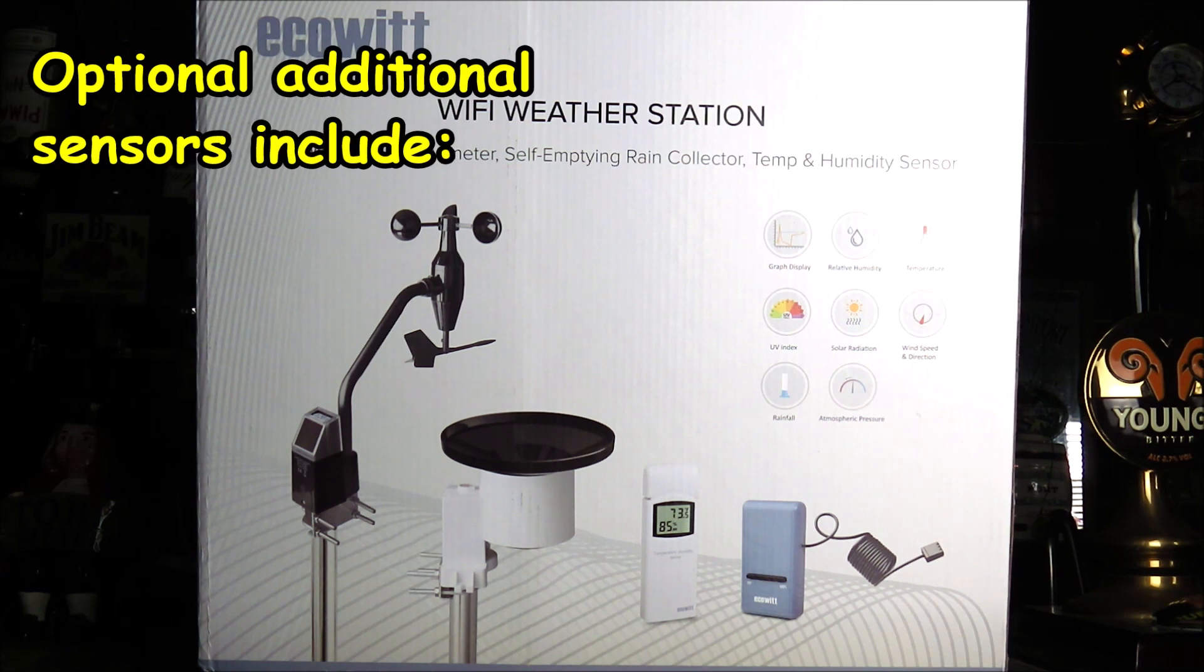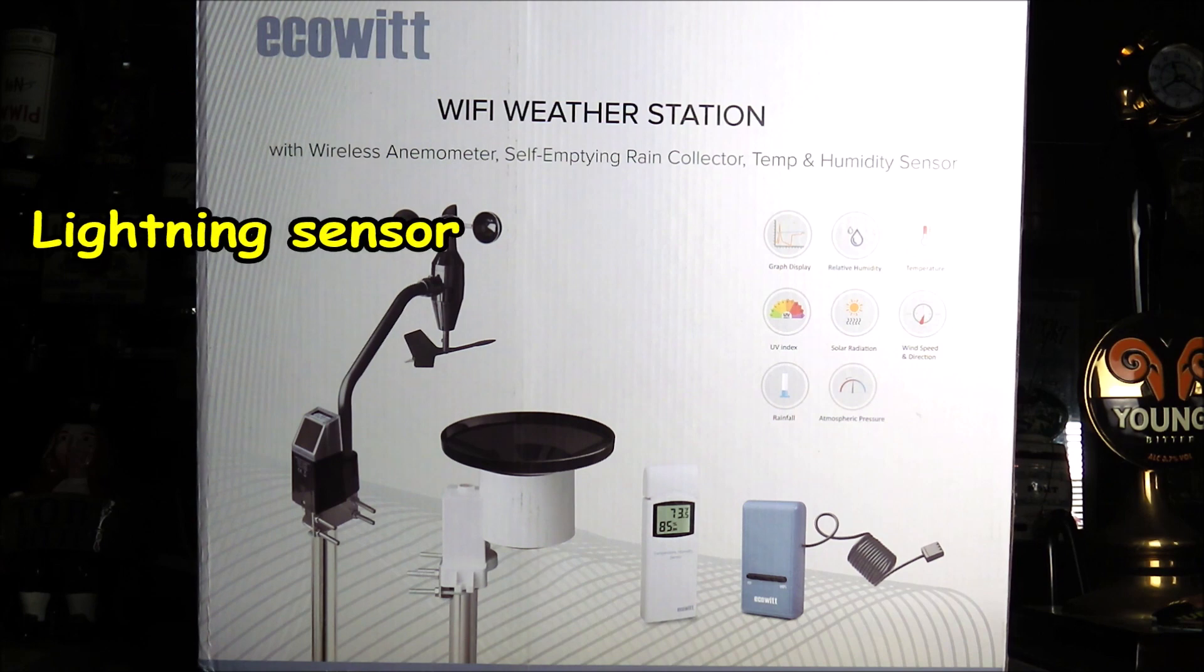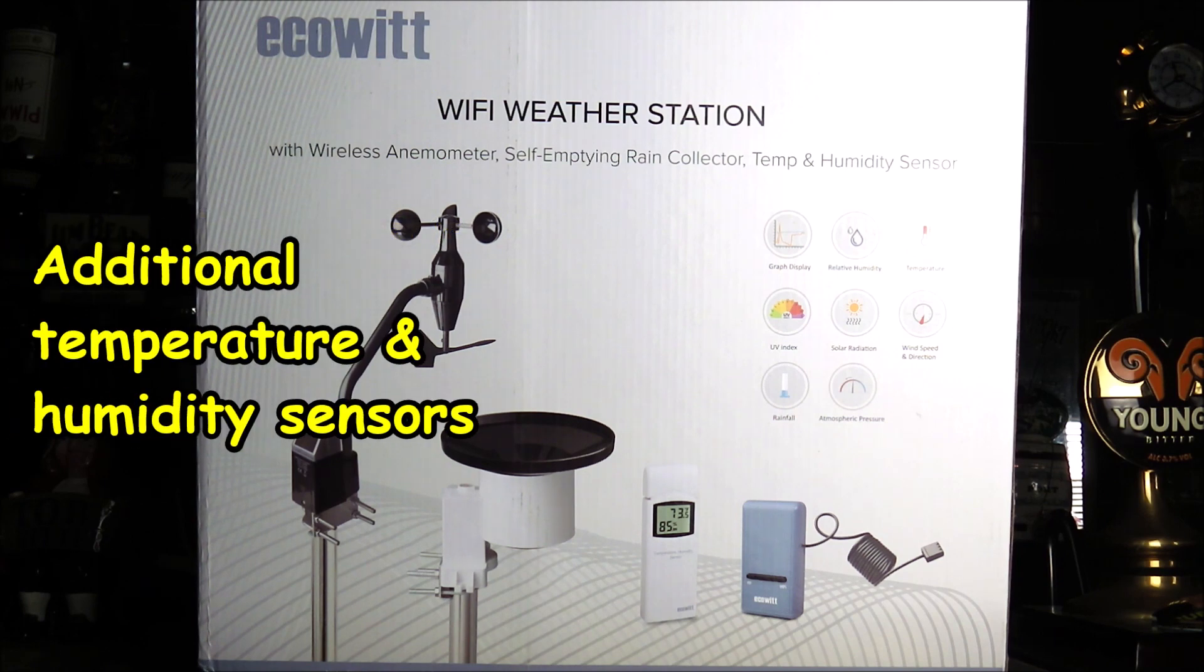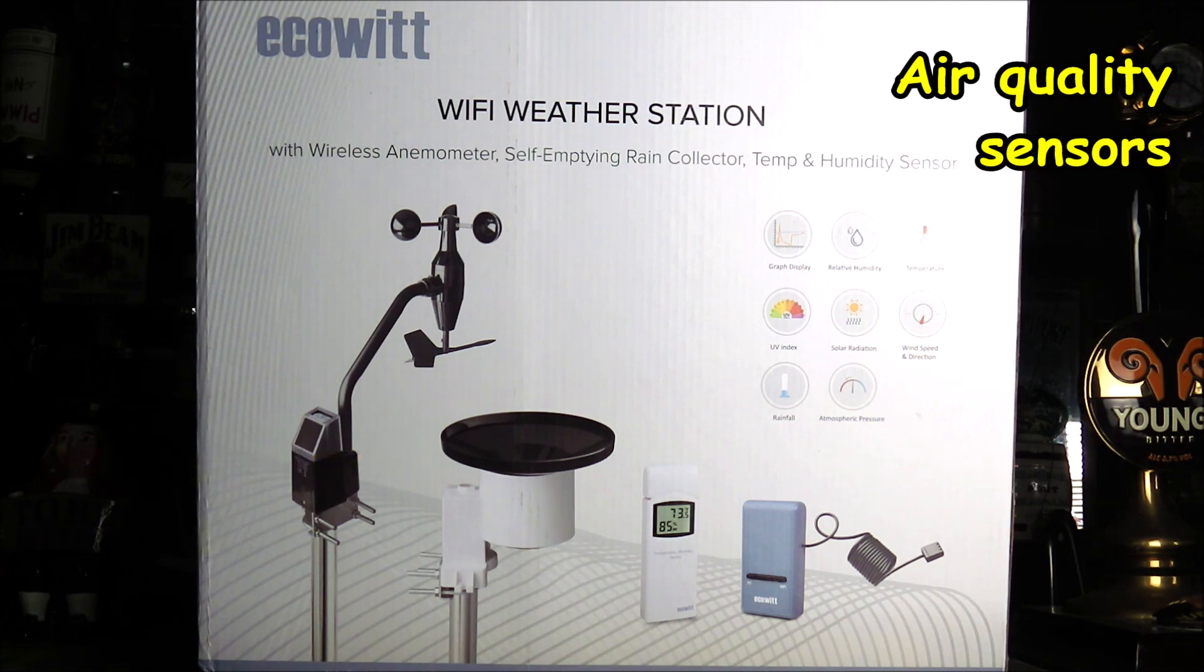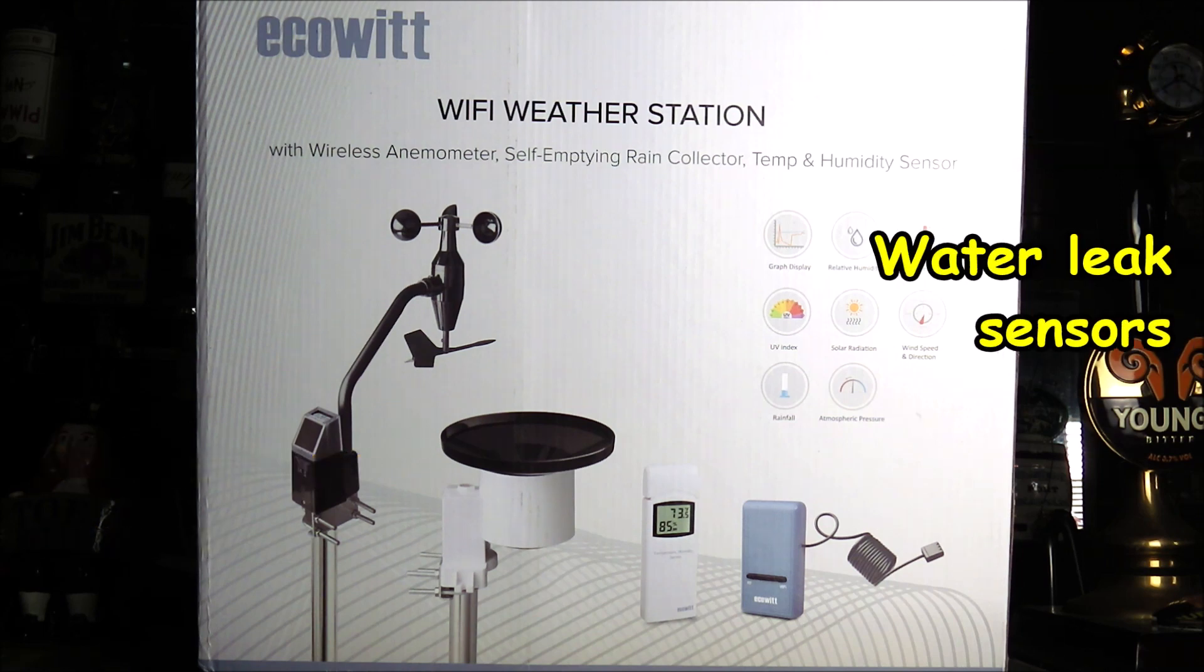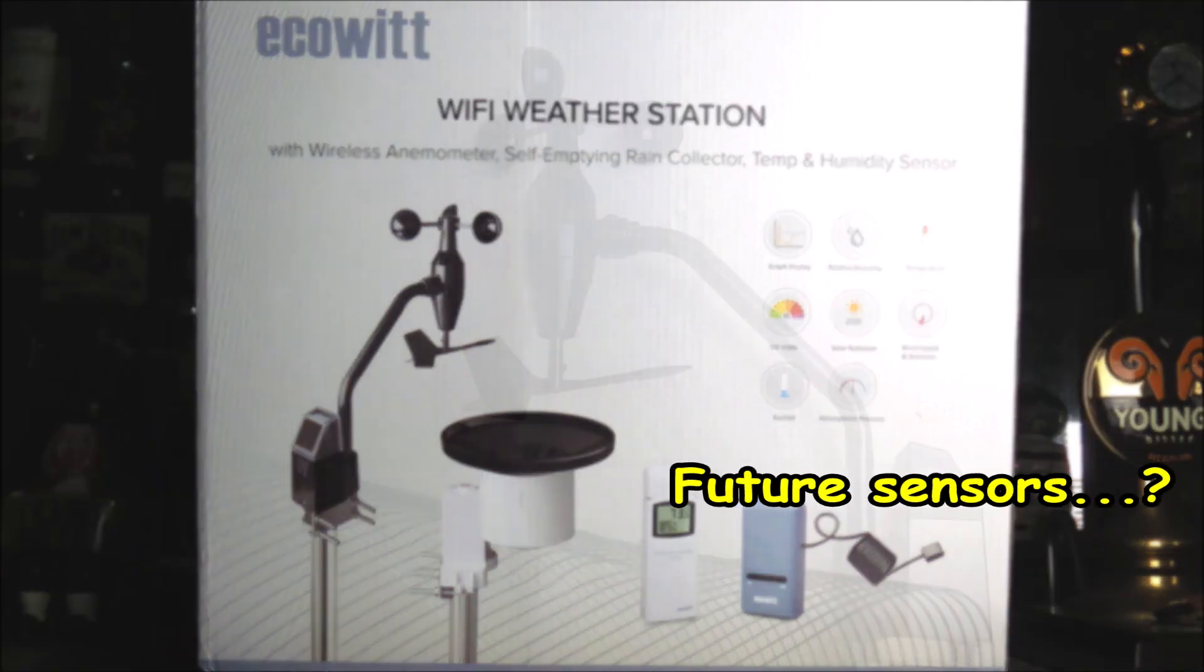Additional optional extra sensors that you can purchase include a lightning sensor, up to eight multi-channel temperature and humidity sensors, up to eight soil moisture sensors, up to four air quality sensors, and up to four water leak sensors. They're also looking to develop future sensors as well.